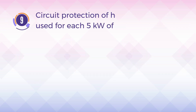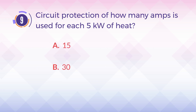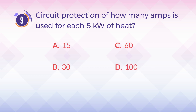Number 9. Circuit protection of how many amps is used for each 5 kilowatt of heat? A. 15. B. 30. C. 60. D. 100.